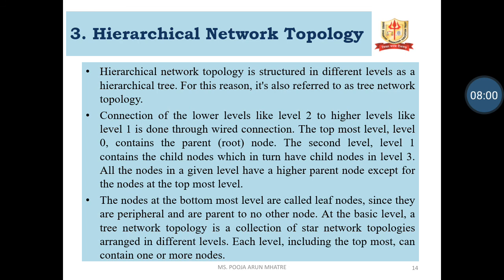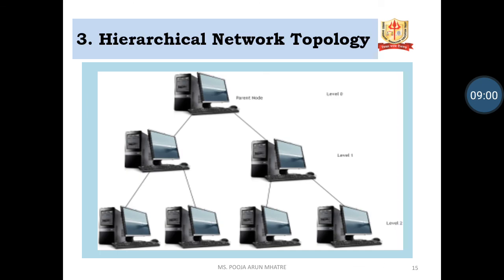Hierarchical Network Topology: The hierarchical network topology is structured in different levels as a hierarchical net tree. For this reason, it is also referred to as a tree network topology. The connection of lower levels like level 2 to a higher level like level 1 is done through a wired connection. The topmost level 0 contains the parent root. The second level, level 1, contains the child nodes, which in turn have child nodes at level 3. The nodes at the bottommost level are called leaf nodes, as they are peripherals and parent to no other node. At the basic level, the tree network topology is a collection of star network topologies arranged in different levels, where each level including the topmost can contain one or more nodes. The diagram shows the hierarchical network topology.